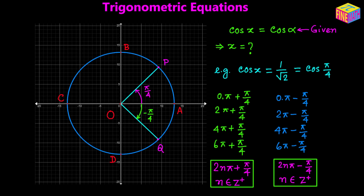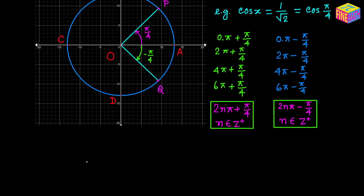So far we have been rotating OP or OQ in the counterclockwise direction to find a general solution. Now I am going to rotate OP in the clockwise direction, and similarly rotate OQ in the clockwise direction, to see how the angles form. First let's talk about OP, which is currently forming a positive angle of pi over 4.